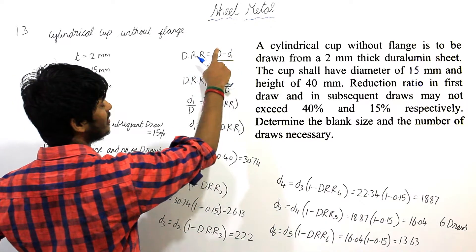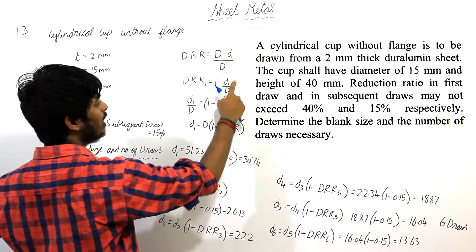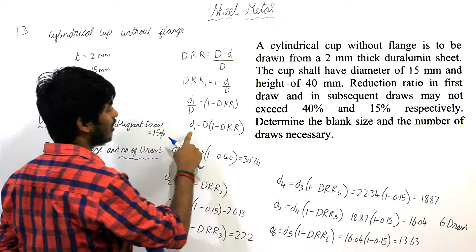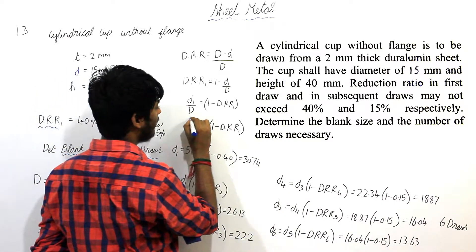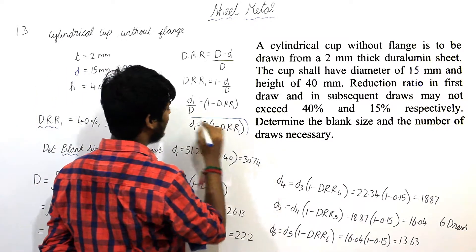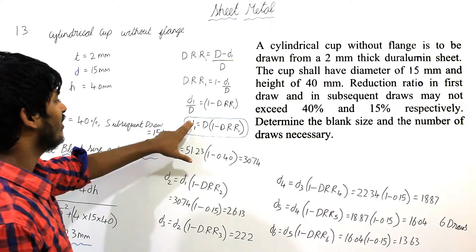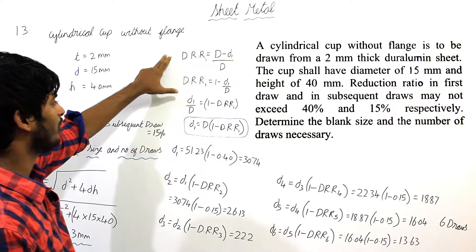I am taking this capital D as constant. So, 1 minus small d1 by capital D. Simplifying this, I am getting small d1 is equal to capital D into 1 minus DRR1. This is the final formula. We have derived this formula from this one.